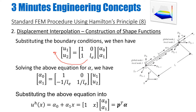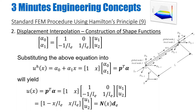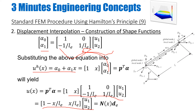Now I substitute the values of α₀ and α₁ back into the displacement interpolation function, replacing those unknown constants with the expressions derived from the boundary conditions. Multiplying and simplifying, I end up with a final relationship for u(x) in terms of nodal displacements and the location x within the element. In this way I have eliminated α₀ and α₁ — the unknown constants — using the boundary conditions.